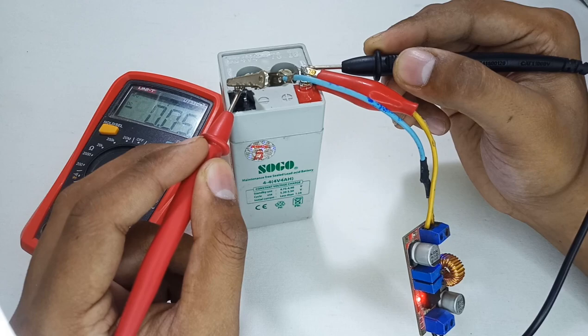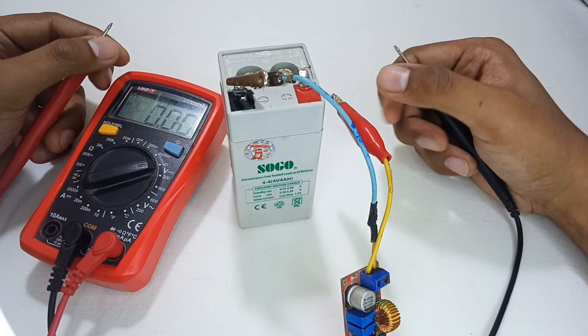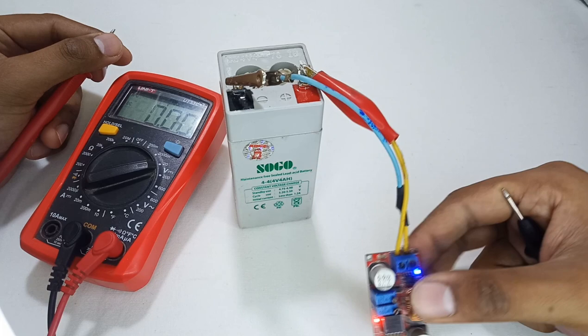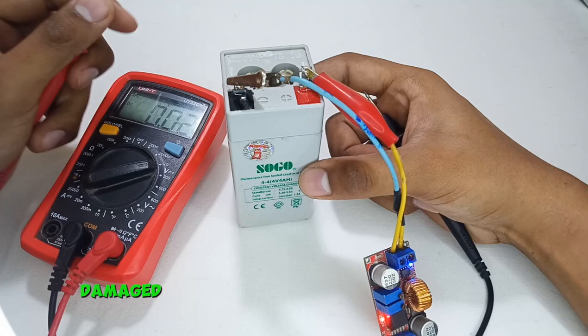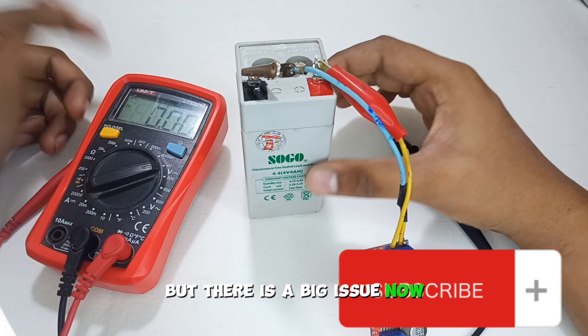So there is a big issue now. The problem is that the module is going into short circuit mode, means current limiting mode, because this battery is damaged internally and its cells are shorted. So unfortunately this battery can't be repaired. So I was saying to you that there is no issue, we can easily repair it, but now we cannot repair this battery. So don't forget to subscribe my channel, stay tuned.